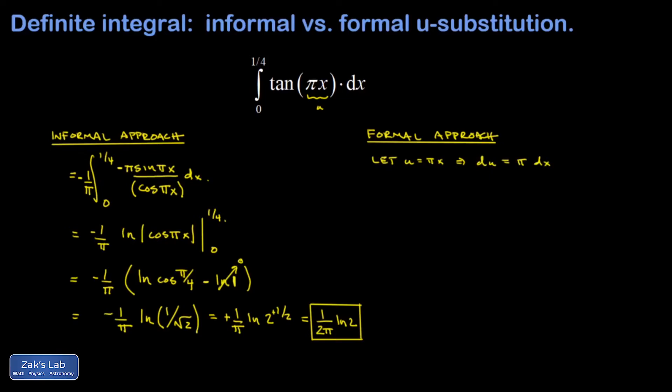I'm also going to transform the limits of integration so I don't have to think about x anymore. And I say when x is zero, it means u is pi times zero, which is also zero. And when x is one fourth, it means u is pi over four.